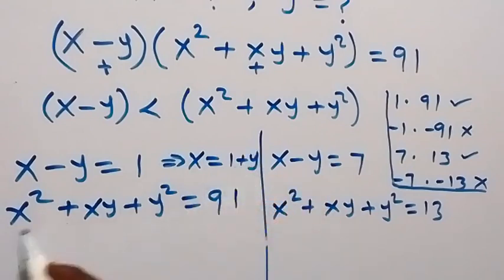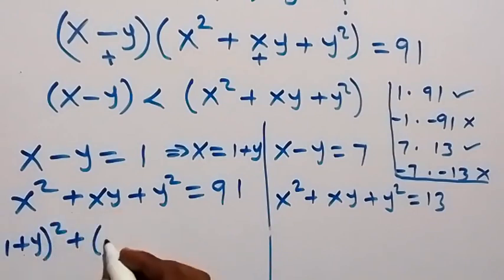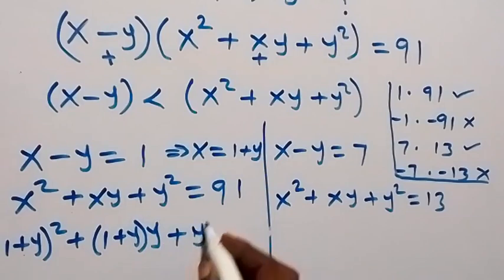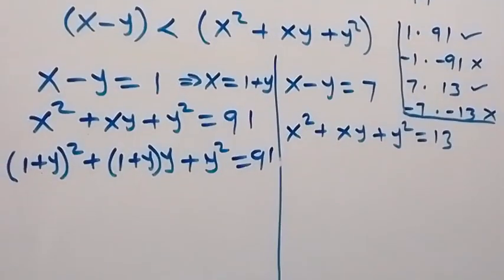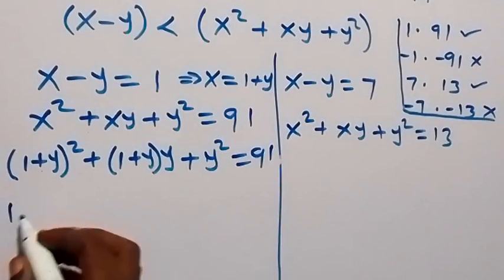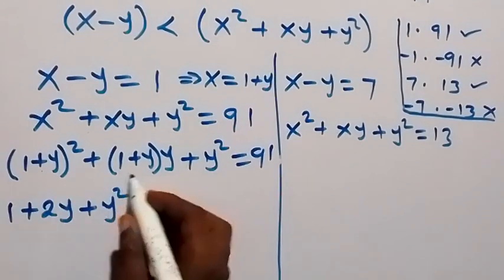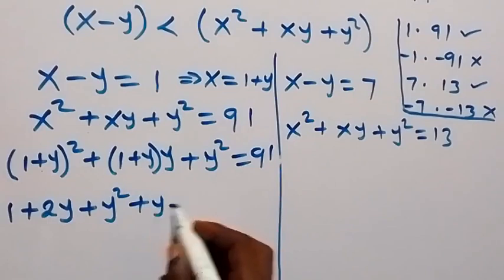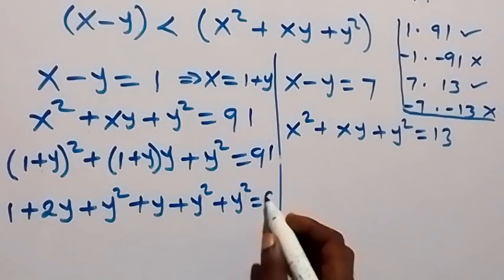Now we substitute x equals 1 plus y into the second equation. This becomes (1 plus y) all squared, plus (1 plus y) times y, plus y squared, which equals 91. Expanding gives 1 plus 2y plus y squared, then plus y plus y squared, then plus y squared, which equals 91.